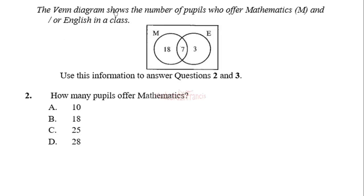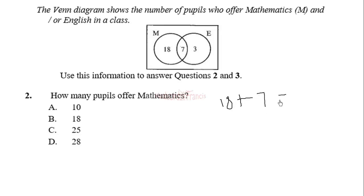The Venn diagram shows the number of people who offer mathematics and English in a class. Use this information to answer questions 2 and 3. How many people offer mathematics? The people who offer mathematics are all the region of the full circle for M. So those who offer mathematics will be 18 plus 7, and that will be equal to 25.